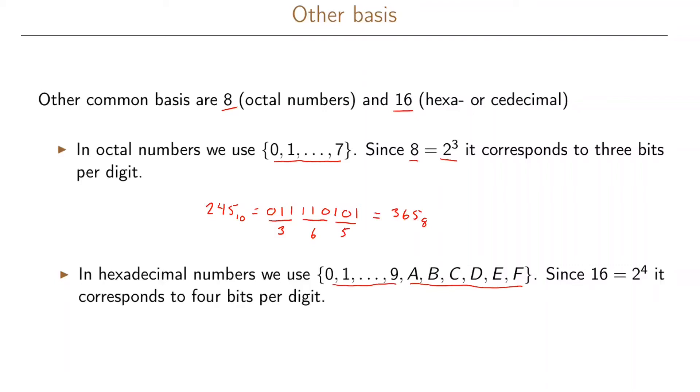And the main reason why hexadecimal numbers are interesting is that 16 is the power of 2 so 16 can be written as 2 to the 4 which means that it corresponds to 4 bits per digit. So we can make the same example again where we use 245 in decimal notation which we indicate by a 10 here.